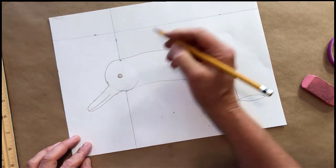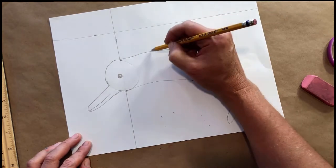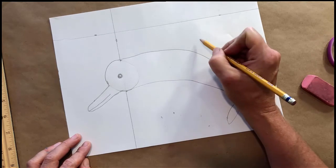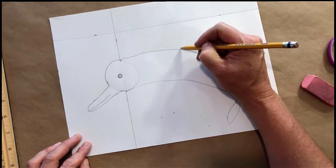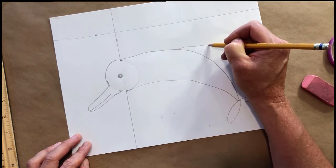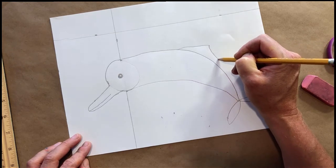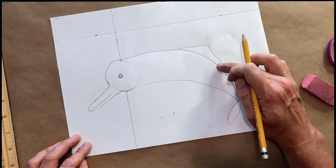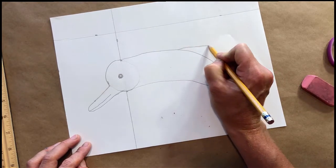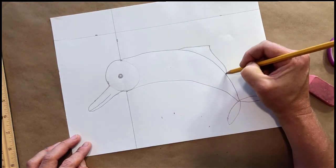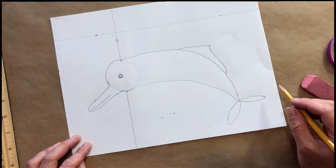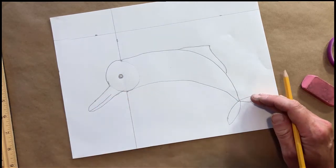Now instead of doing a typical fin which is curved and comes to a point and down, a pink river dolphin's fin is a lot longer and it's further down its back. So draw a longer shape that comes to a point. You'll notice they're just a little bit different from normal dolphins that we see in the ocean.